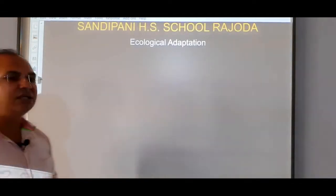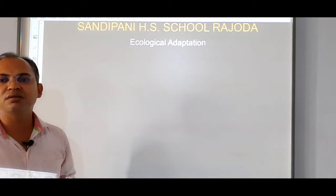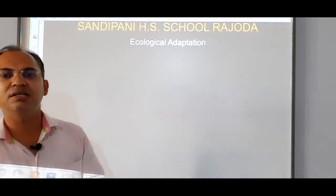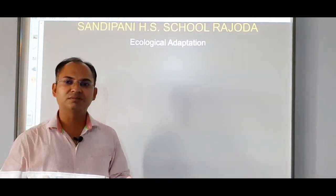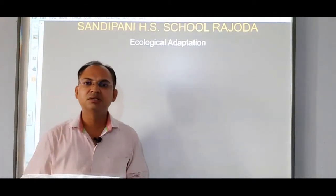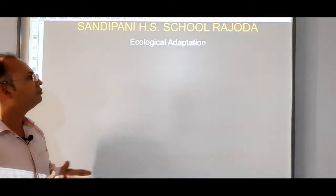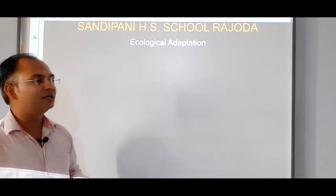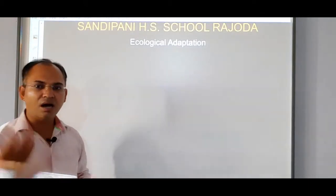If we look at ecological adaptation, first of all we have to classify the organisms present on the earth. You have studied very well about the classification in 11th class. If we broadly classify living organisms into two groups — only plants and animals — because you have learned there are five kingdoms of living organisms present on the earth. But if we broadly talk about these two groups, plants and animals, we will see how they live in the environment.